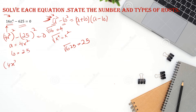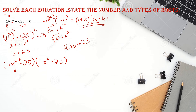Write it as (4x² + 25)(4x² - 25) equals 0. Now apply the same formula again to (4x² - 25): the square root of 4x² is 2x, and the square root of 25 is 5, giving (2x + 5)(2x - 5).